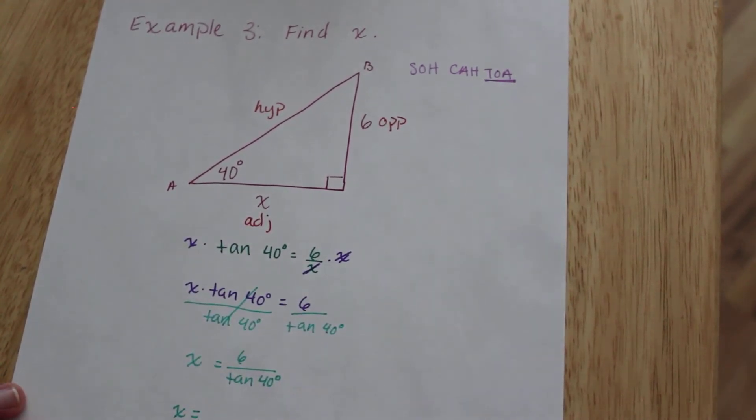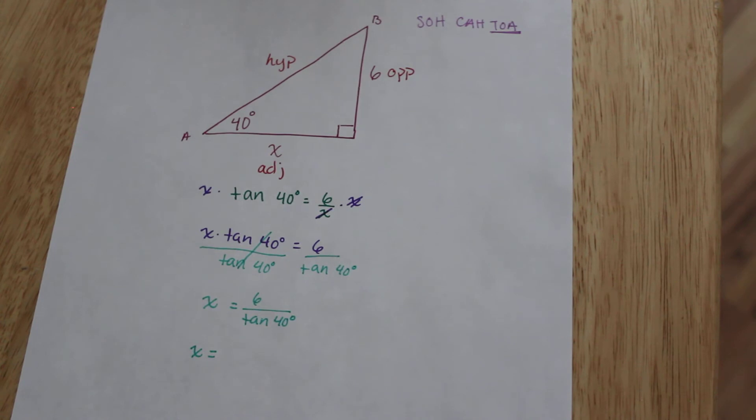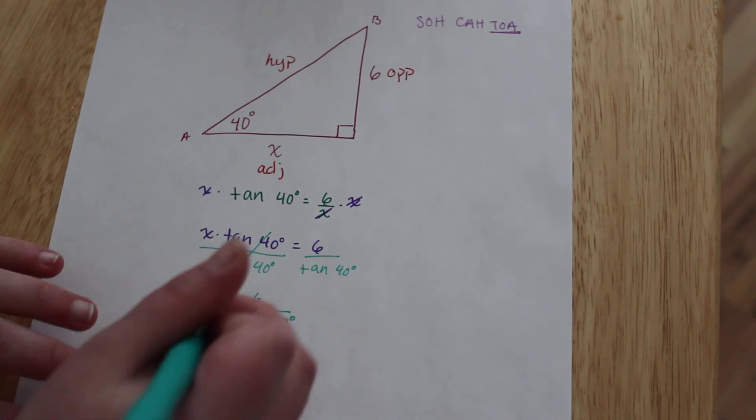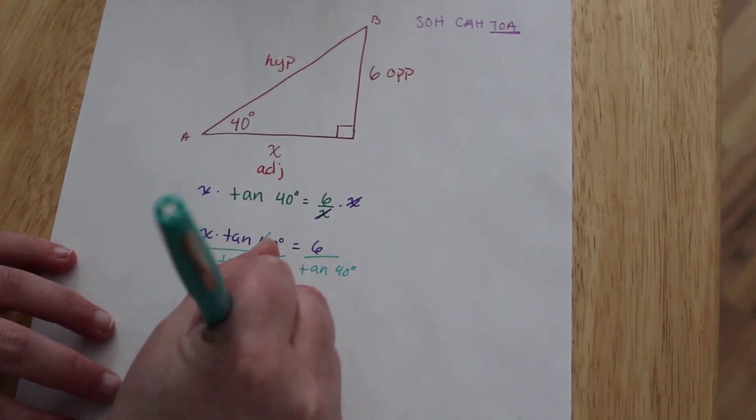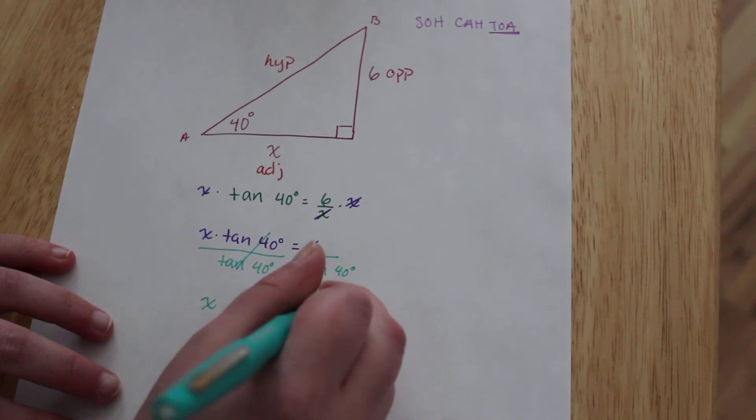Now like I said in the past couple of videos we are going to want to use a calculator because it is going to be really tricky to try and calculate that without a calculator. So on your calculators we'll do 6 divided by the tangent of 40 degrees.